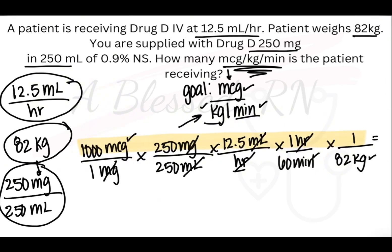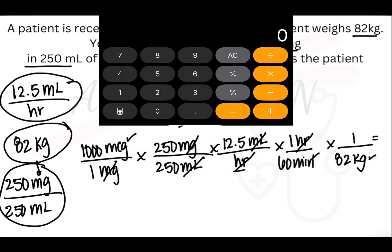So this is how you would do it the old way. Take all your numbers across the top and multiply those together. Write it down. Take all of your numbers across the bottom, multiply those together, write it down, divide the top by the bottom.